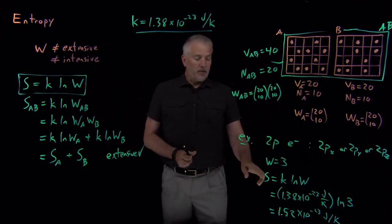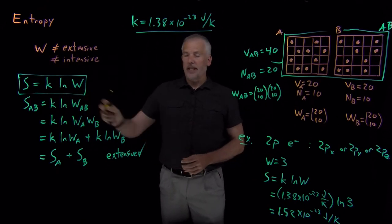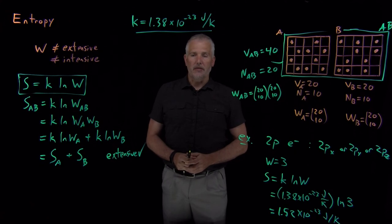So we can calculate the numerical value of the entropy for this electron occupying one of three different orbitals. And again, for now, the important feature of the entropy is that it's simply an extensive version of what we already think of as the multiplicity.